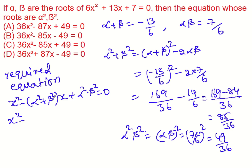x square minus alpha square plus beta square value is 85 by 36 x plus alpha square into beta square value is 49 by 36 equal to 0.